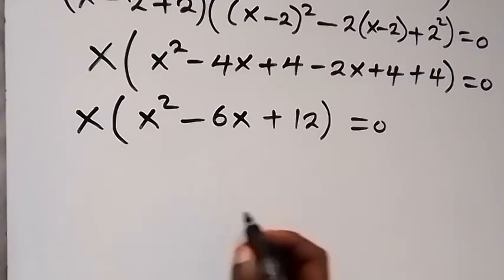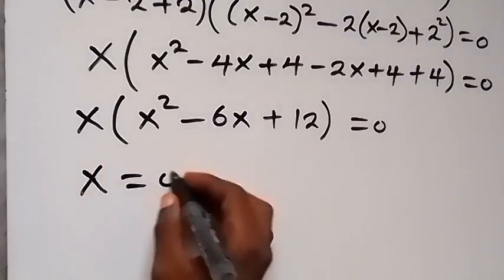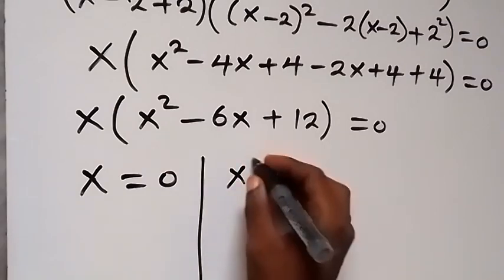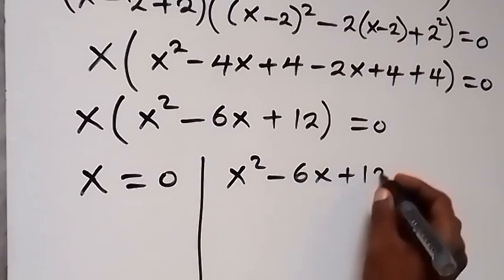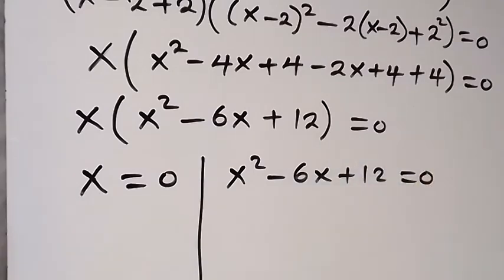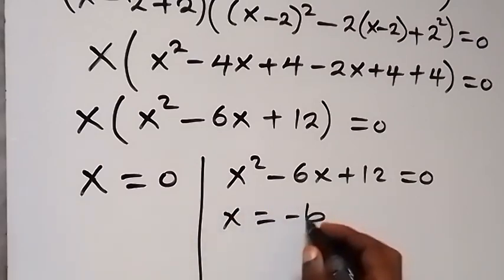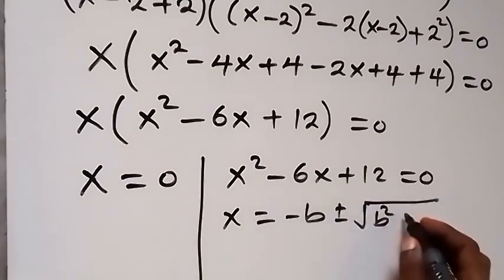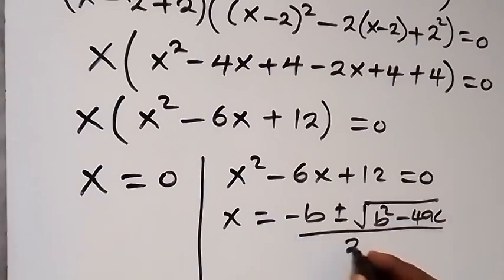From here we have two solutions. We have x equals to 0, and also we have x² minus 6x plus 12 equals to 0. From here you can find this by using the quadratic formula: x equals to minus b plus or minus square root of b² minus 4ac, all over 2a.